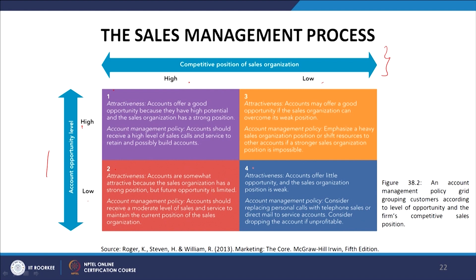In cell 2, where account opportunity level is low but competitive position of the sales organization is high, the attractiveness is that accounts are somewhat attractive because the sales organization has a strong position but future opportunities are limited. Account management policy: accounts should receive a moderate level of sales and service to maintain the current position. In cell 3, where competitive position is low but account opportunity level is high, the account may offer a good opportunity if the sales organization can overcome its weak position. Account management policy: emphasize heavy sales effort to improve position, or shift resources to other accounts if a stronger position is impossible.